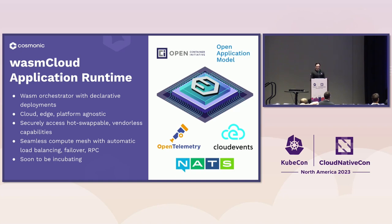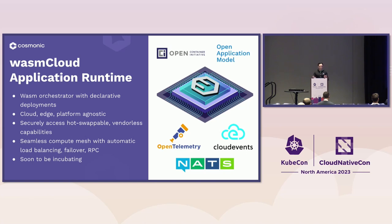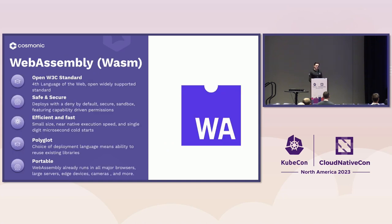WasmCloud is a cloud-native technology. We use OCI for distributing all of our artifacts — you can just push WebAssembly to OCI repositories. We use the Open Application Model for our declarative manifest, Cloud Events for all events published in the system, and we support OpenTelemetry tracing. This integrates really well into a cloud-native context. We're not trying to reinvent the wheel, except with this one thing called WebAssembly — our unit of compute is not a container.